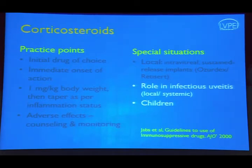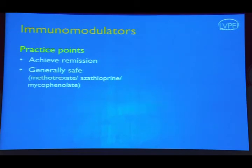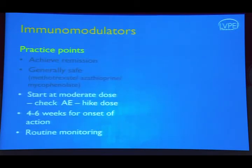Immunomodulators have the advantage of achieving remission when used appropriately and are generally safe — side effects are actually more frequent with corticosteroids. The most common immunosuppressants used — methotrexate, azathioprine, and mycophenolate — have a good safety profile. Start at a moderate dose, check for adverse effects, then increase to maximum required dose. They have a slow onset of action of four to six weeks, during which steroids must be continued, followed by gradual steroid tapering. Routine monitoring is required.